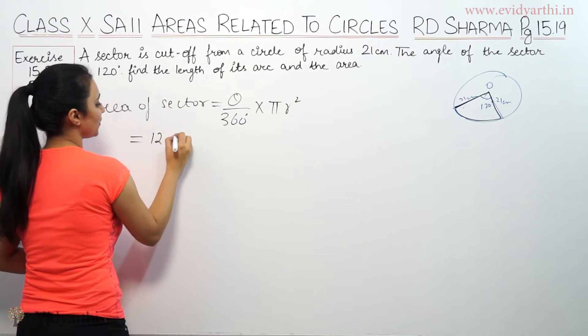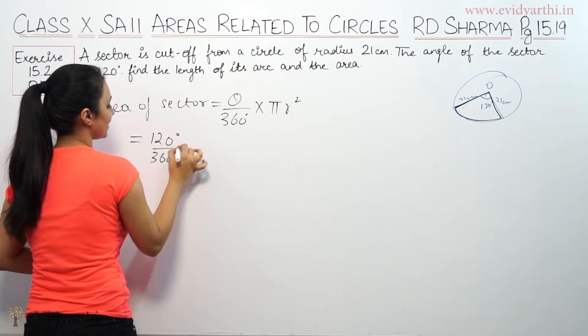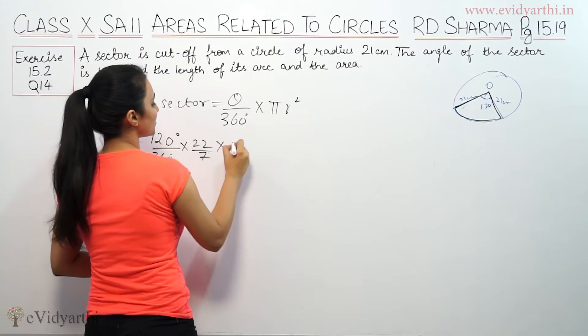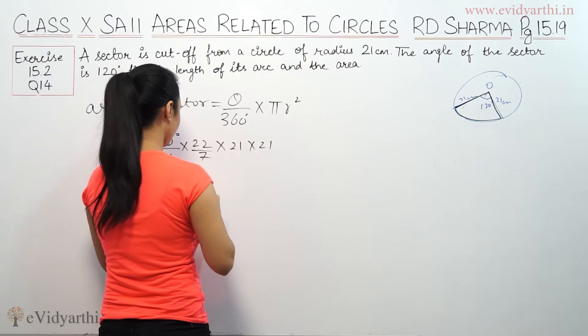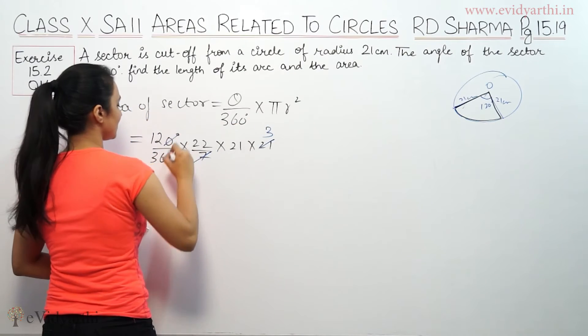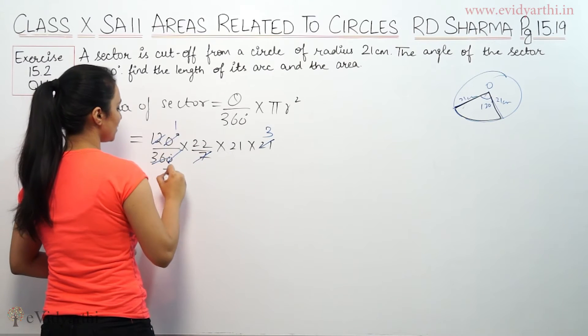Theta here is 120 degree by 360 degree into 22 by 7. R square means 21 into 21. This is 7 cancel, 7 goes. 0 is 0 cut. 12 cancel, 12 goes. 3 cancel. So 22 into 21.